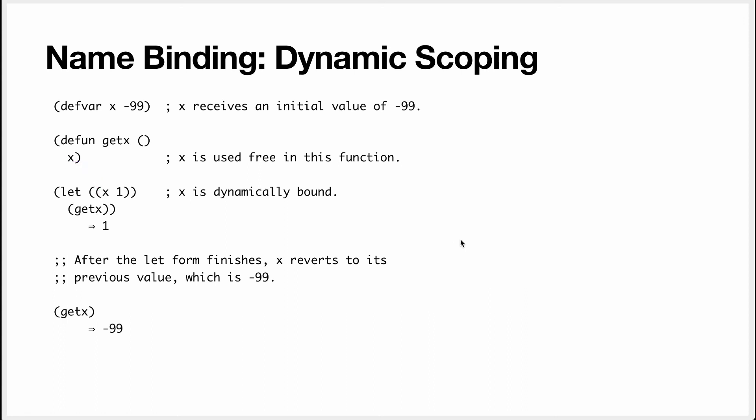Why is this interesting? In Emacs Lisp — the configuration language for the Emacs editor — you might want to change how some code works depending on the context. For example, if you're editing a Ruby file and also a Python file: in the Ruby file, when you reformat code, you might want tab size to be two spaces; in the Python file, four spaces. So you define a variable and use a 'let' to temporarily assign it two or four spaces depending on the context, then run the code — and it looks up the variable and uses the proper value. This idea was popular in the past and is making a resurgence; implicits in Scala implement something like dynamic scoping.